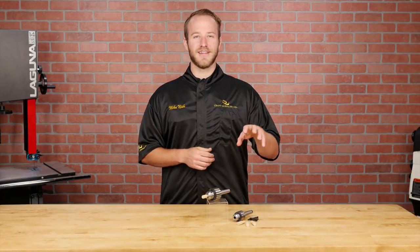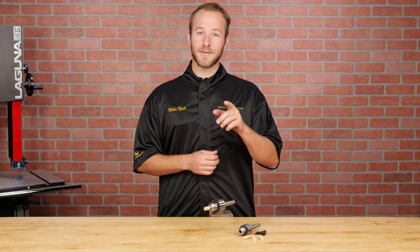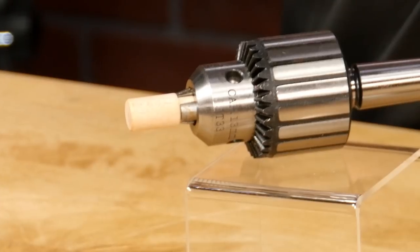The dowel chuck is offered in either a three-eighths or a half-inch bore, but keep in mind they're designed solely for holding dowels and not drill bits.